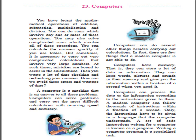Lesson number 23: Computers. You have learned the mathematical operations of addition, subtraction, multiplication, and division. You can do sums which involve any one or more of these operations, and you may also solve complicated sums which involve all of these operations. You can calculate the answers quickly if you use tables. But sometimes it is necessary to carry out very complicated calculations that involve very large numbers, and at such times mistakes are bound to occur, and then you waste a lot of time checking and rechecking your answers.